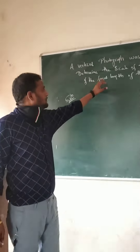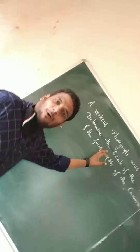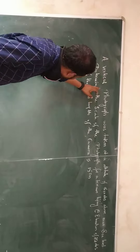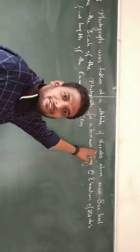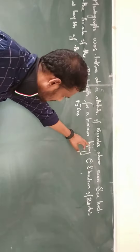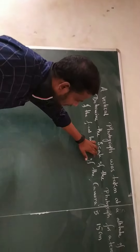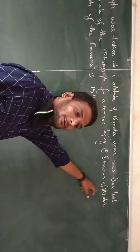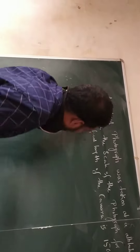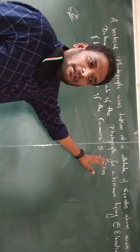This is the problem of scale, the fourth model that is aerial photogrammetry. A vertical photograph was taken at an altitude of 1600 meters above mean sea level, and we need to determine the scale of the photograph for a terrain lying at an elevation of 250 meters. The focal length of the camera is 15 cm.